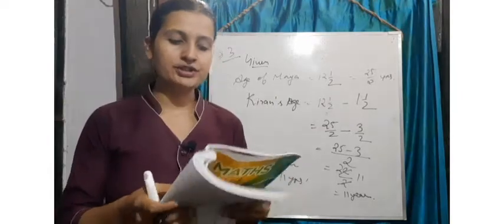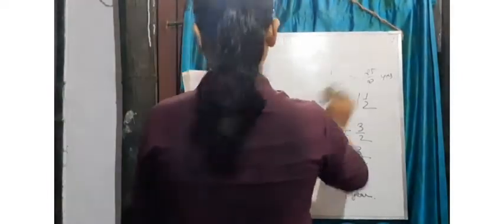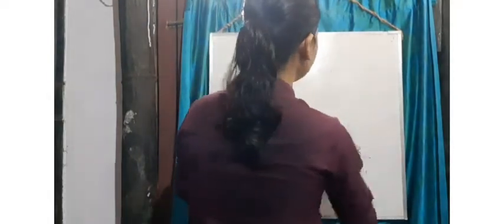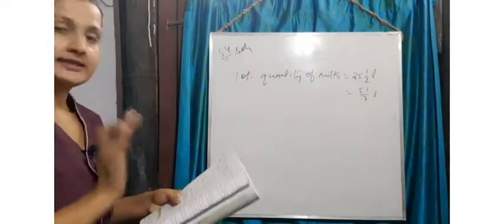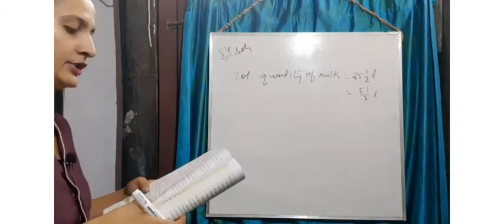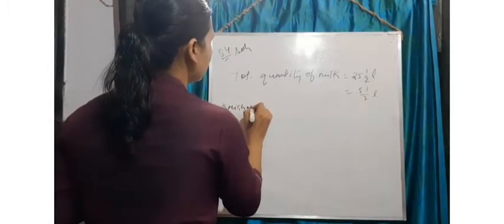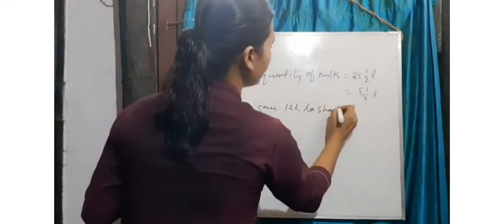Now let us try one more question, that is question number four. Krishna had twenty-five and a half litres of milk. So the total quantity of milk is twenty-five and a half litres, that is fifty-one by two litres. It is said in the question that she gave twelve litres to Santa.